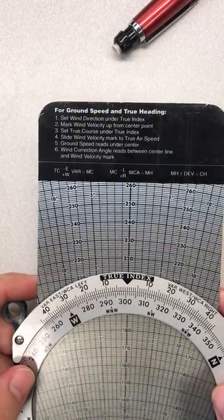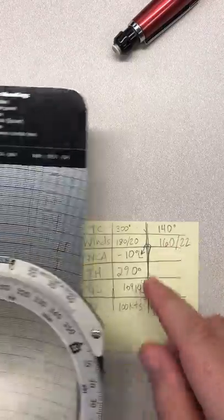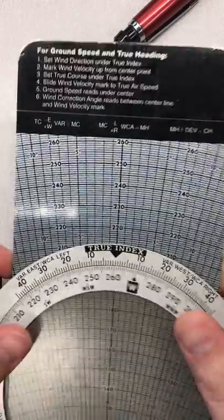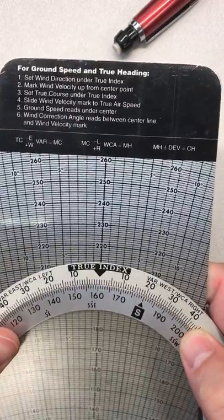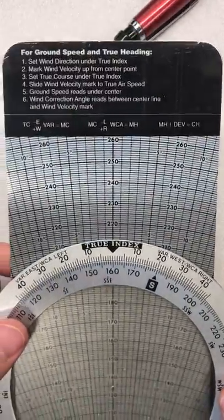So step one: set wind direction under true index. Wind direction 1-6-0. So roll around 1-6-0 and there it is set. Wind direction is under true index.